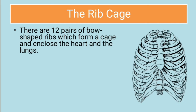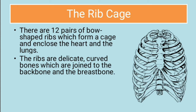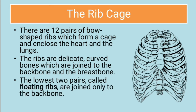Next is the rib cage. There are 12 pairs of bow-shaped ribs which form the cage, and it encloses the heart and the lungs, which are also very important parts of the human body. This is like a shield for these important organs. The ribs are delicate curved bones which are joined to the backbone and the breast bone. The lowest two pairs are the floating ribs because they are joined only to the backbone and not to the breast bone.